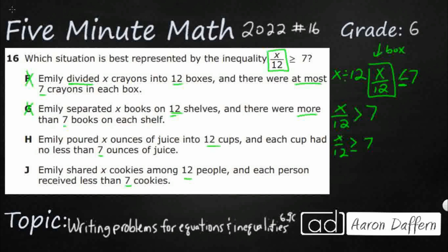J: Emily shared x cookies among 12, and each person received less than 7. That gives us x over 12 less than 7. So notice we've got all four inequalities covered: G is greater than, H is greater than or equal to — which is what we want — F is less than or equal to, and J is less than. There's a nice symmetry here. Our answer is H.